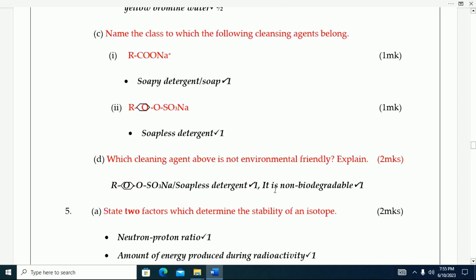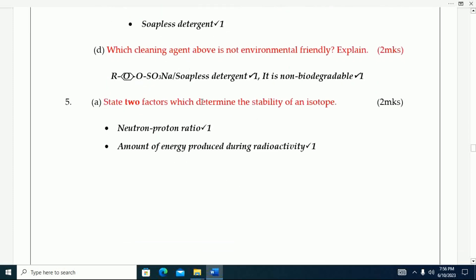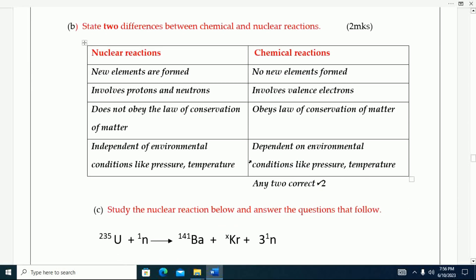Number five: State two factors which determine the stability of an isotope. That one is neutron-proton ratio. Then amount of energy produced during radioactivity.